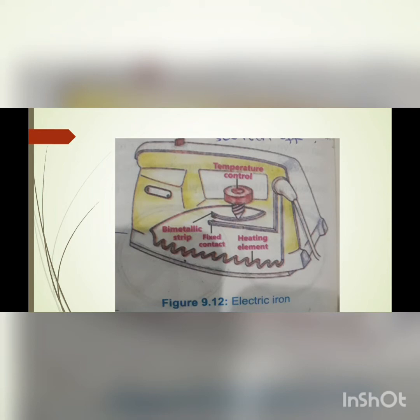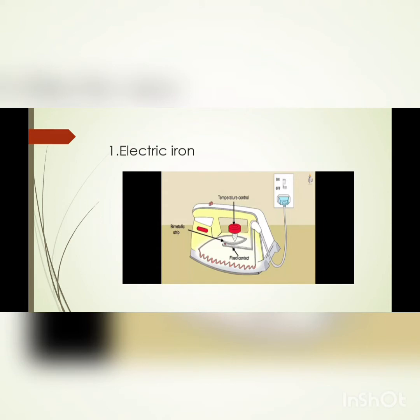This is the diagram of an electric iron. You can see in this diagram: the temperature controller, the bimetallic strip which is present in band form, the fixed contact, and the heating element which is present in spring form. These are the parts present inside the electric iron.